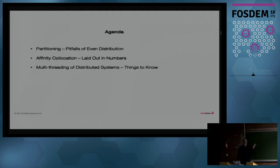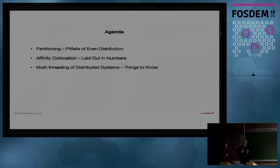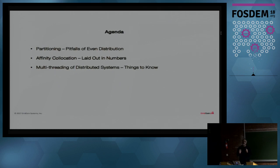Just three issues because of time pressures. The first two I'll talk about; the third one I'll leave for you — feel free to drop me an email, it's just my first name dot last name at gridgain.com. So: partitioning, the pitfalls of even distribution — which might seem like a good thing but isn't necessarily useful in all circumstances — and then affinity co-location, the idea of co-locating data, which is an architectural decision you have to make.